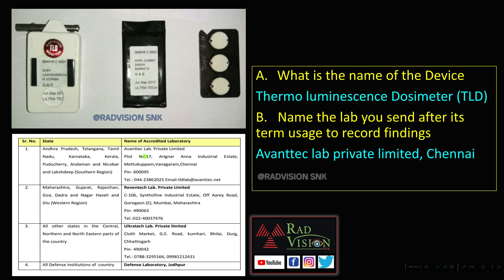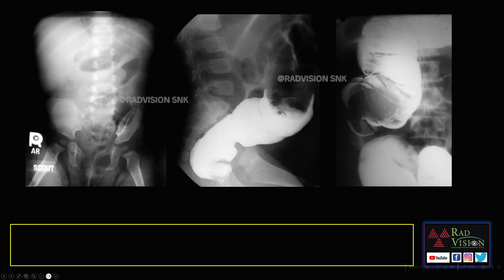Andhra Pradesh, Telangana, Tamil Nadu, Karnataka, Kerala, Puducherry, Andaman & Nicobar, and Lakshadweep send to Avenetch Lab, Chennai. Maharashtra, Gujarat, Rajasthan, Goa, Dadra & Nagar Haveli send to Rinantech Lab, Maharashtra. All other central, north, and northeastern parts of the country send to Ultratech Lab, Chhattisgarh. All defense industry institutions send to Defense Laboratory, Jodhpur. Remember these labs - the TLD badge may be asked in viva.